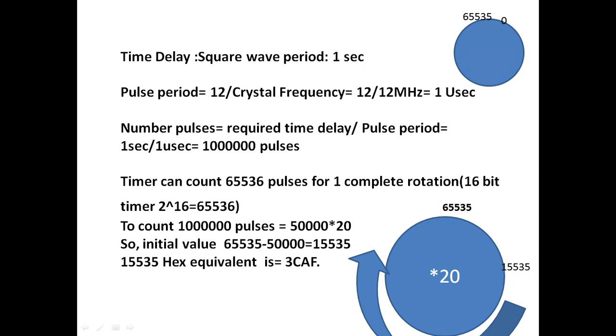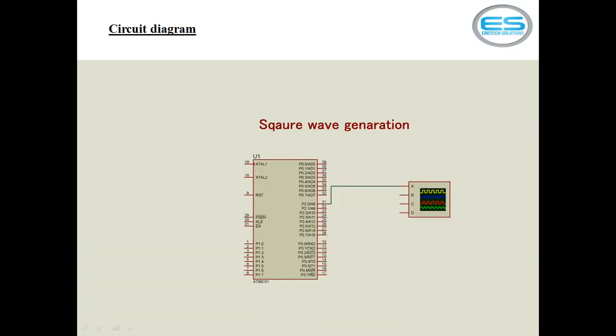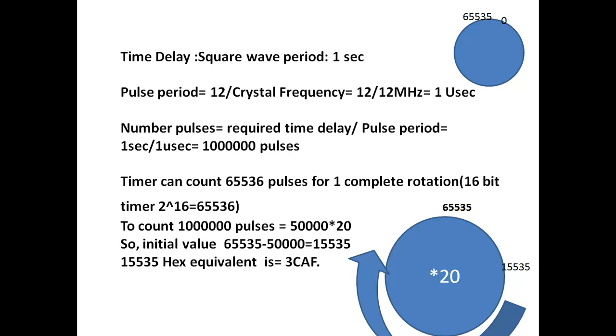The timer can count only 65,536 pulses for 1 rotation. If you are looking for this number of pulses, you should go with this multiplication combination, which is 50,000 into 20 times. Whereas timer can count only 0 to 65,535. To count these 1 crore pulses, you need to count these 50,000 into 20. Sorry, it is 10,000,000 pulses. To count these 10,000,000 pulses, you need to go with this multiplication combination 50,000 into 20.